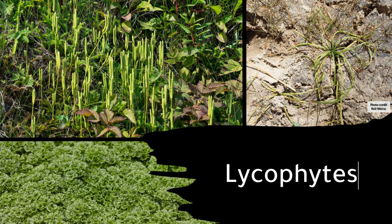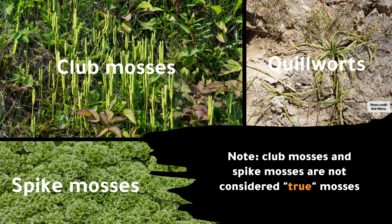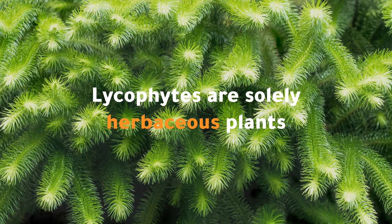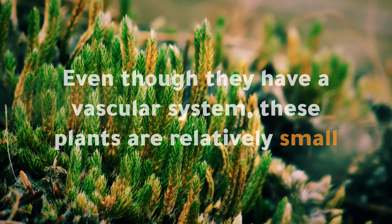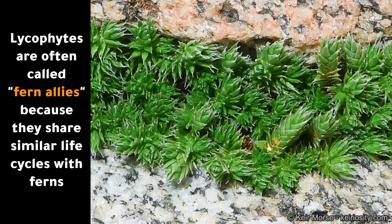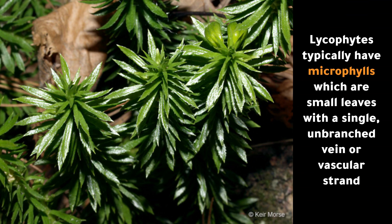The first major group of the pteridophytes are the lycophytes. Lycophytes include club mosses, spike mosses, and quillworts. Note that club mosses and spike mosses are not considered true mosses. Lycophytes are solely herbaceous plants, and even though they have a vascular system, these plants are relatively small. Lycophytes are often called fern allies because they share similar life cycles with ferns; however, lycophytes differ mainly from true ferns by leaf structure. Lycophytes typically have microphylls, which are small leaves with a single, unbranched vein or vascular strand.